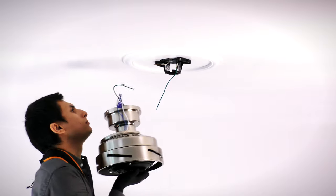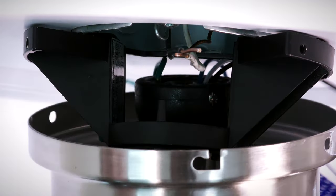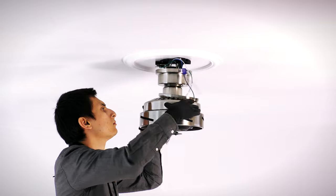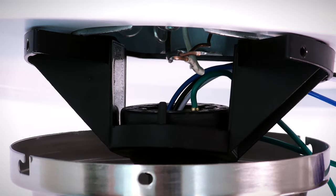Carefully bring the fan motor up to the ceiling and place the hanger ball in the hanger bracket. Turn the motor until the groove in the ball aligns with the tab in the bracket.